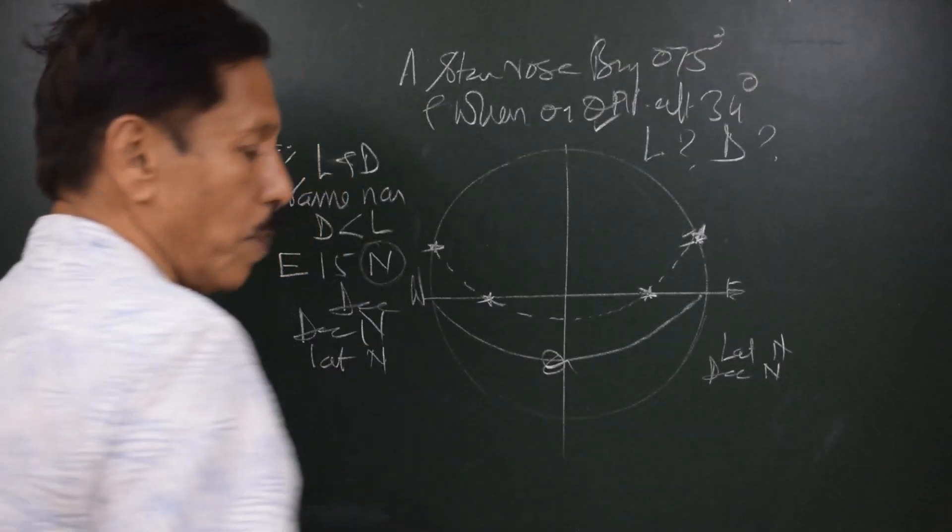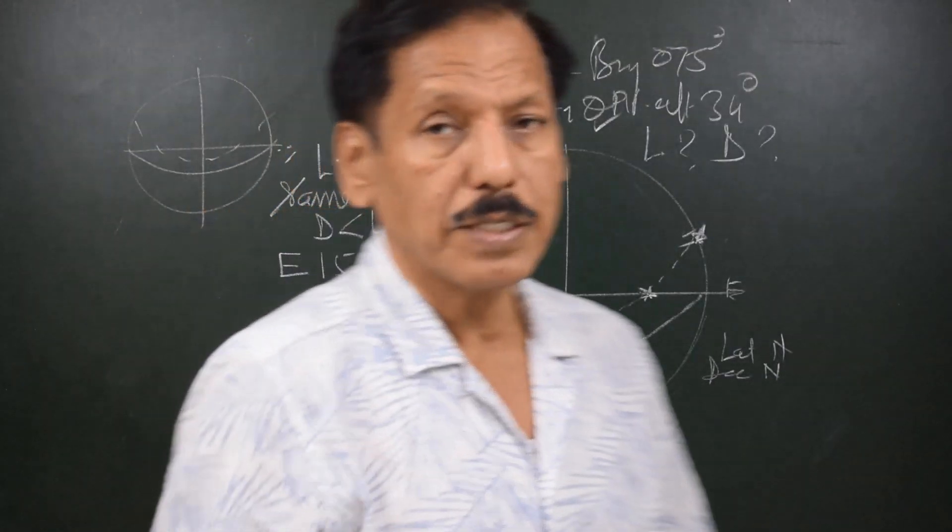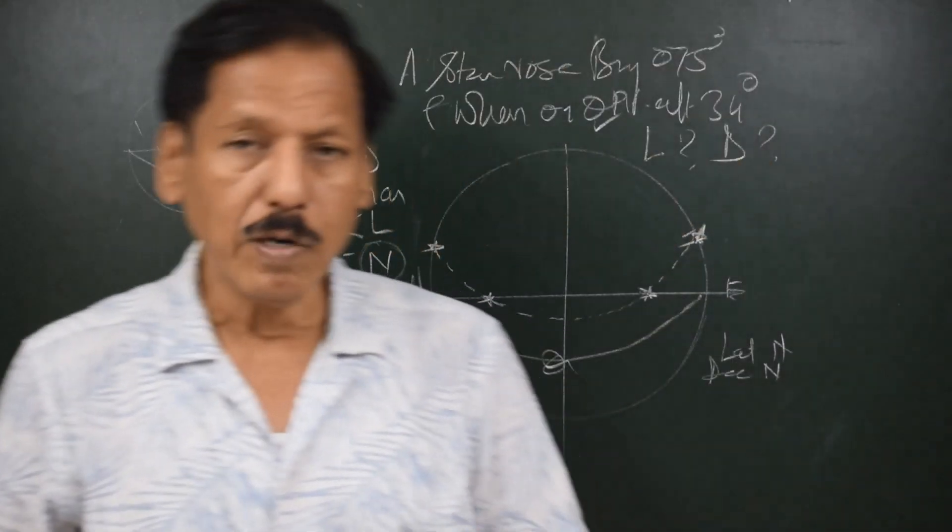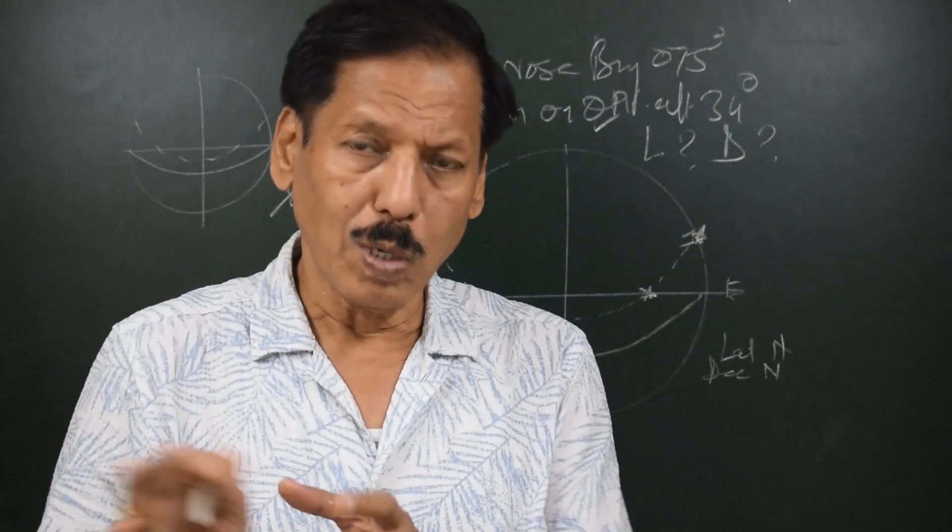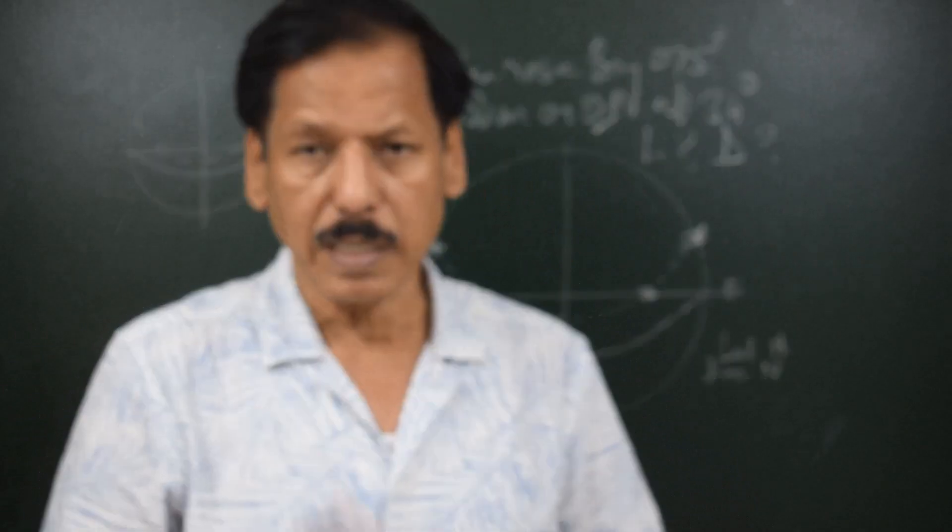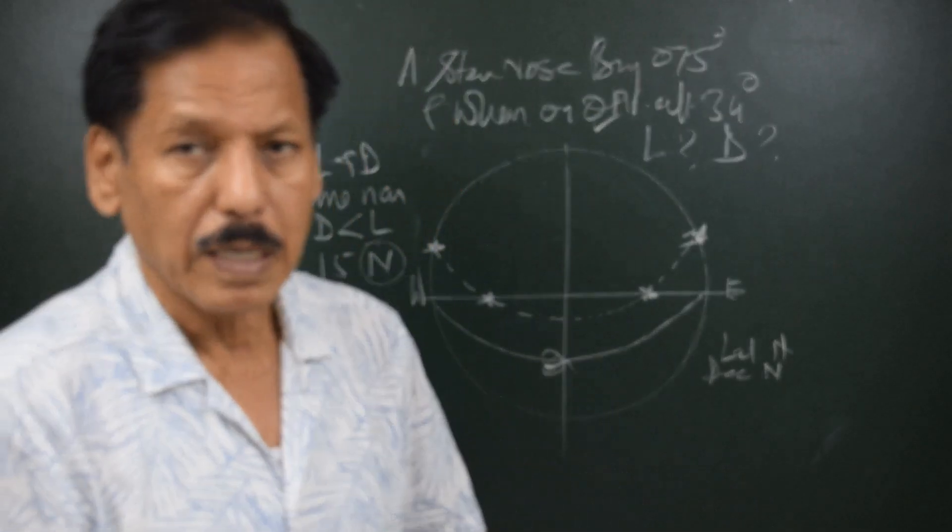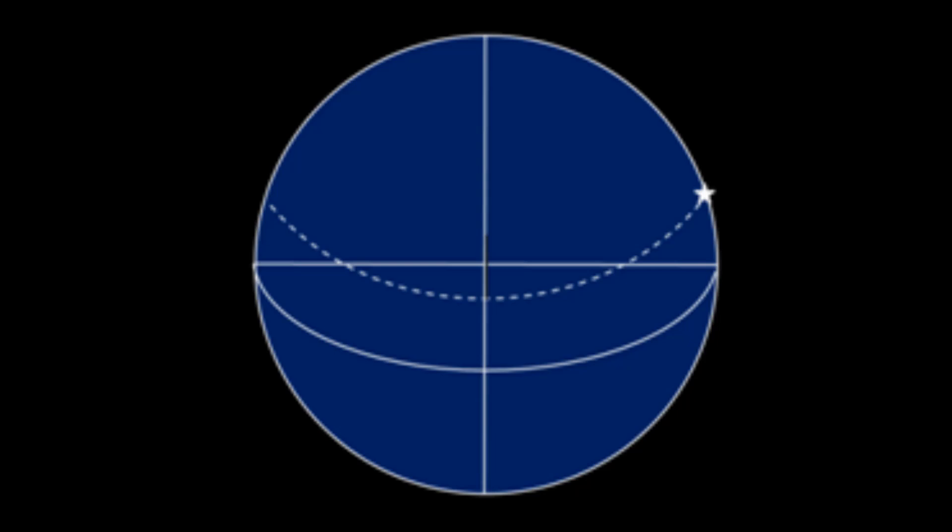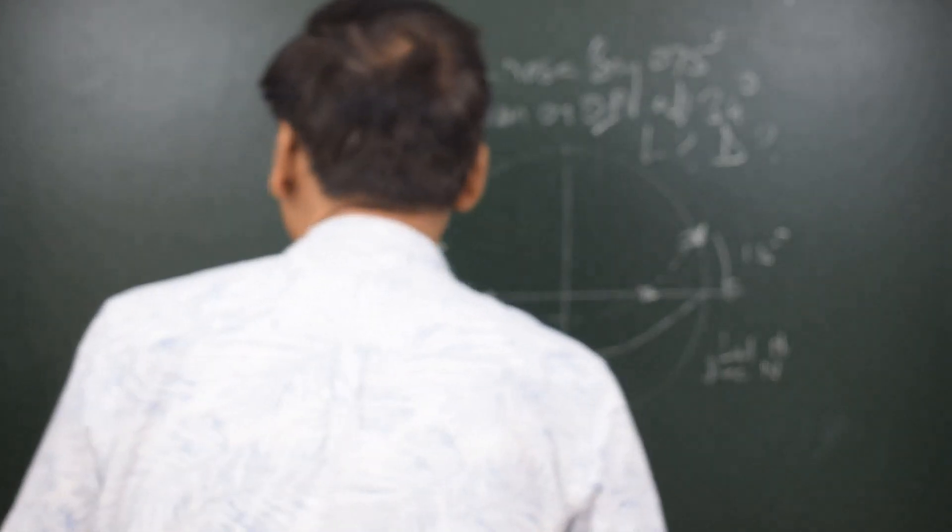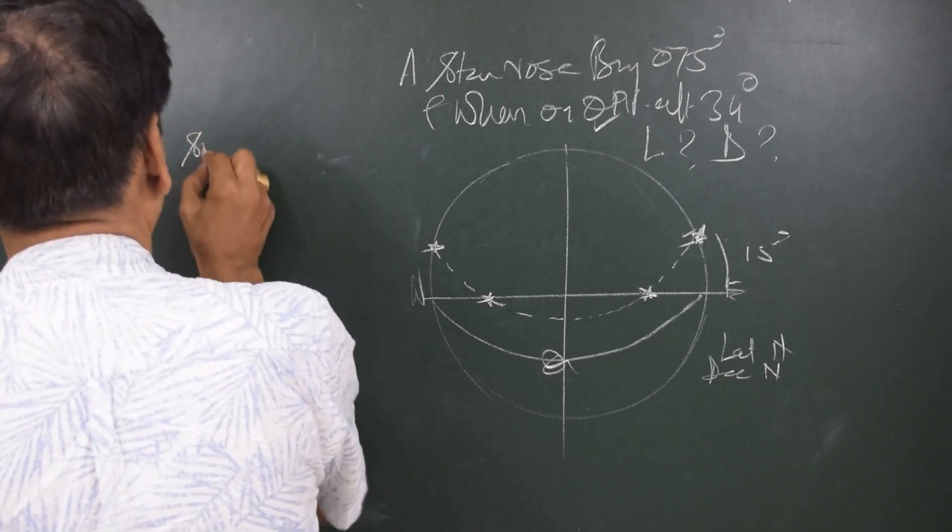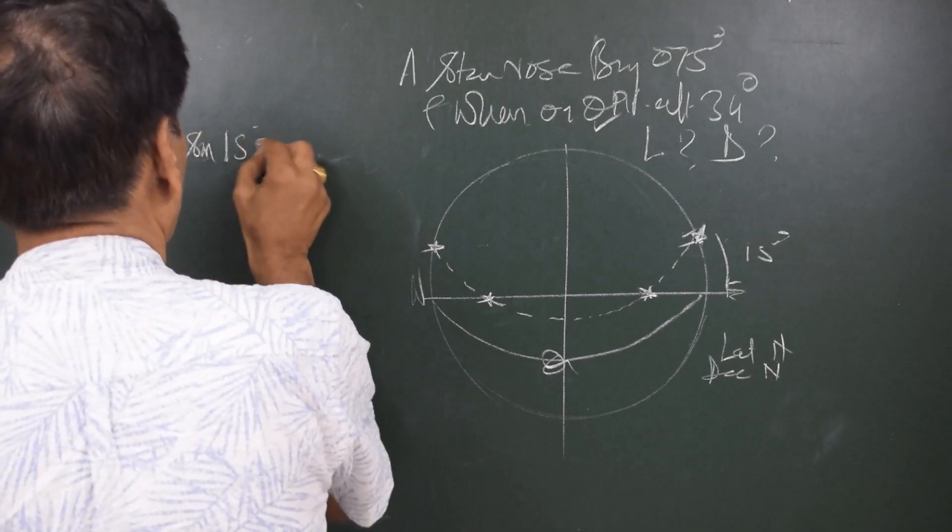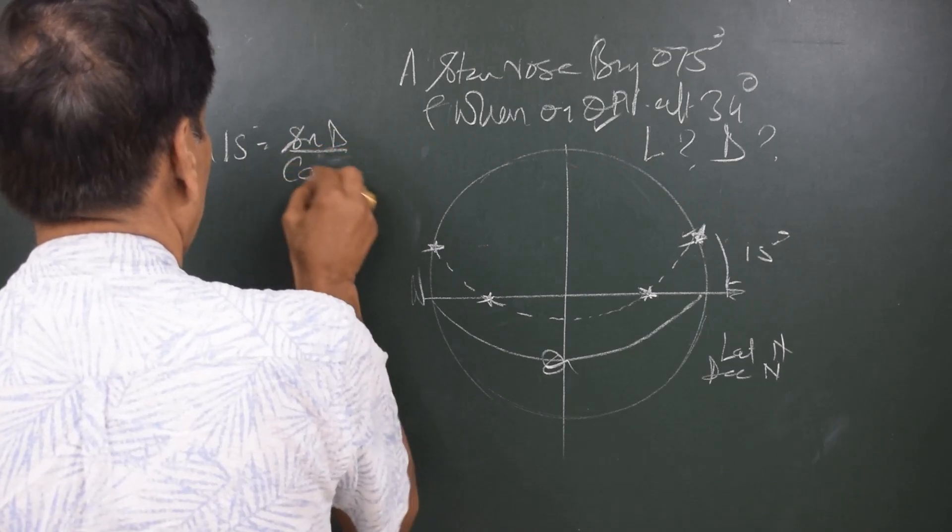So that gives you an idea that I should be making a diagram like this. There are two ways in which we can make the initial diagram. And in any of these astronomical numerical, it is very very important as to what is the correct diagram. Once you have got the correct diagram, probably you will get the answer. If the amplitude is 15 degrees, as I said, whenever a body is rising, we can always use the amplitude formula.